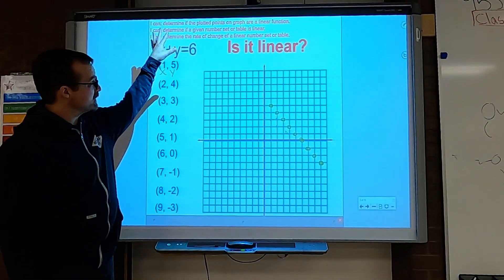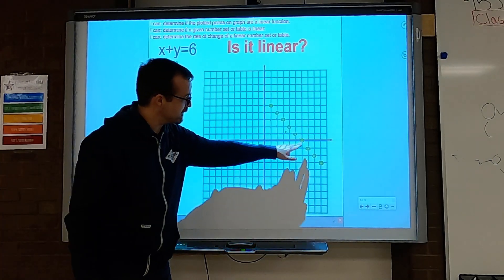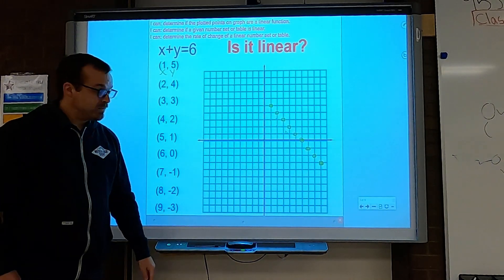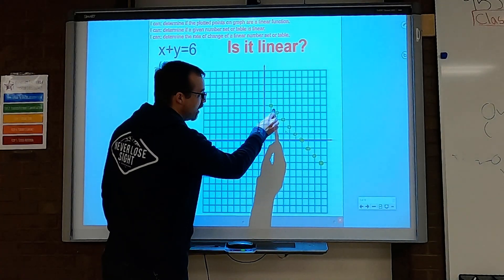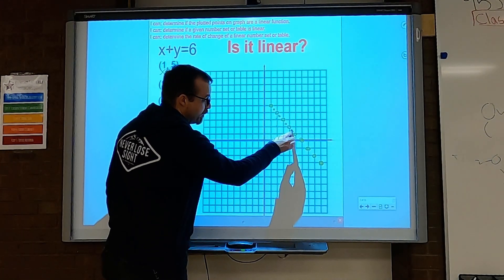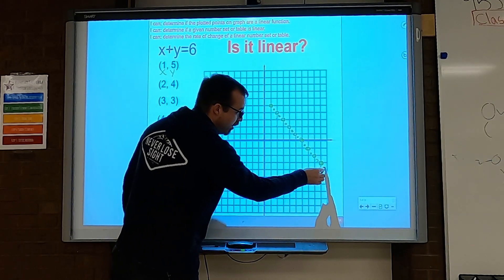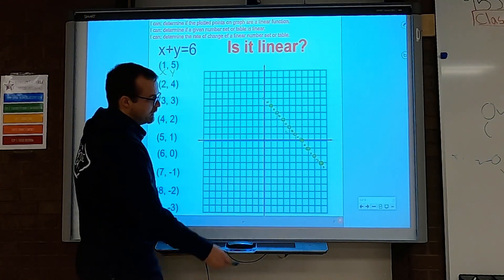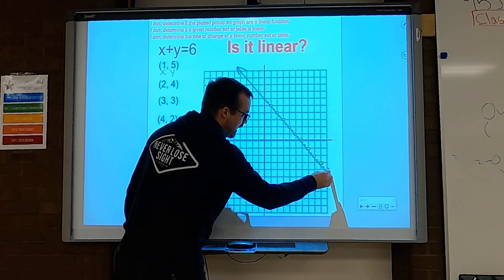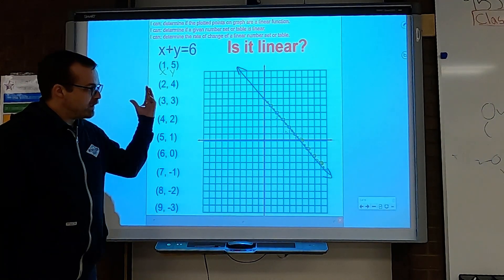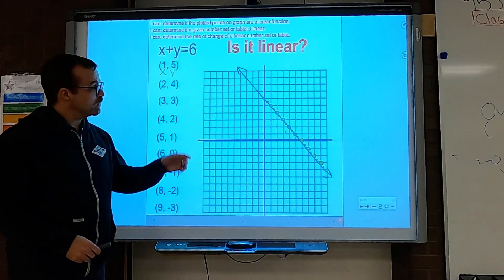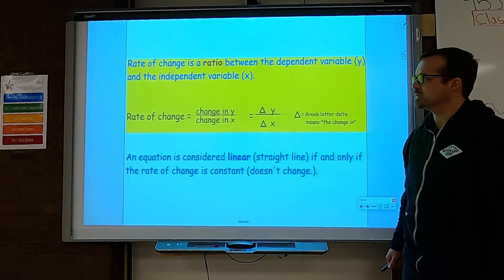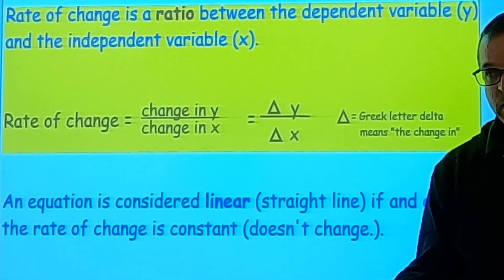So x plus y equals 6 — is that linear? Yes, because the relationships between the independent and dependent variables are linear. If I were to go back and add all those other points, I'd see all the in-betweens too. I could sit here forever listing solutions and plotting ordered pairs, but eventually I'd be drawing a line — a straight line. It's linear, and that line represents all of the solutions to the equation x plus y equals 6.